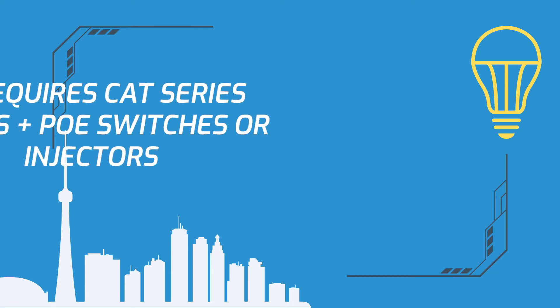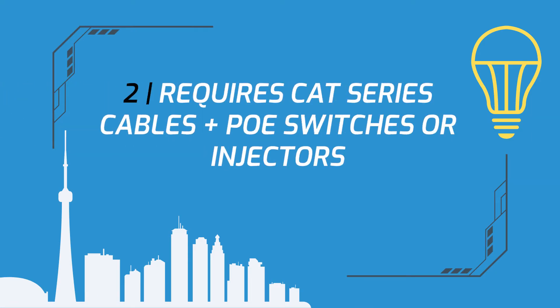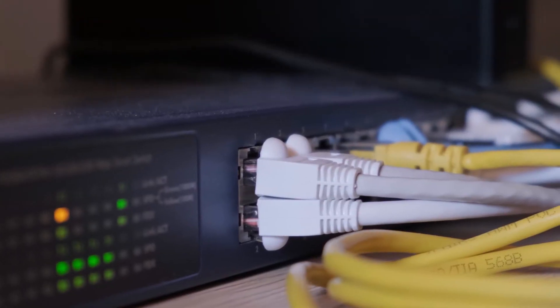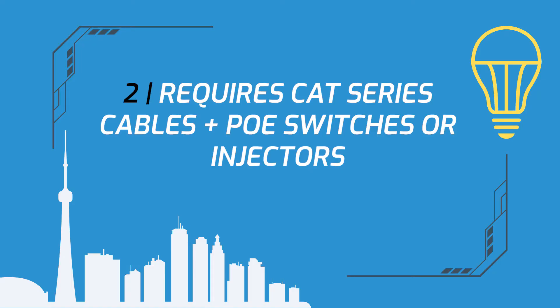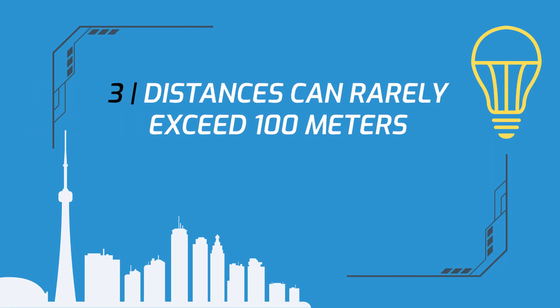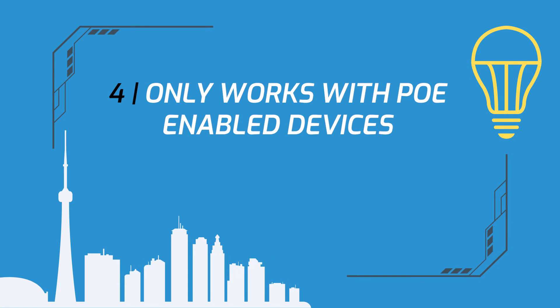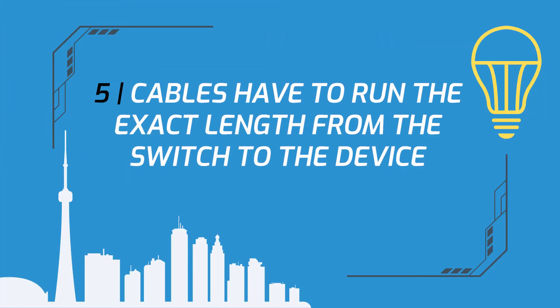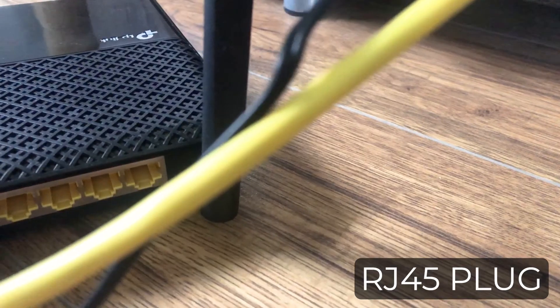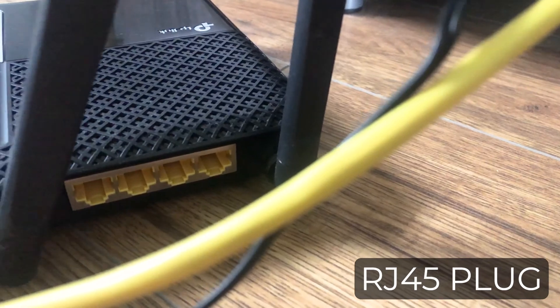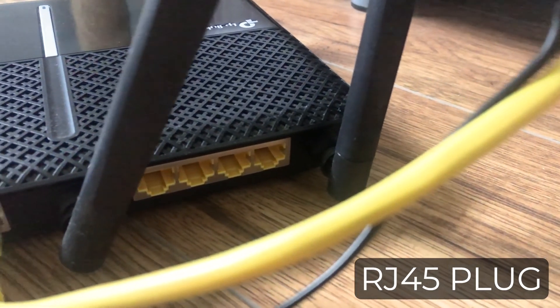Installing PoE can also be expensive for lighting because it requires special CAT series cables with thicker copper gauges, as well as PoE switches or injectors. Also, because it's a low voltage system, distances can rarely exceed 100 meters due to voltage drops along the cable. PoE only works with PoE-enabled devices, so light fixtures must be compatible. Cables in a PoE system also have to run the exact length from the switch to the device, meaning cables must be stripped, cut, and terminated with an RJ45 plug — making installation pretty time consuming.